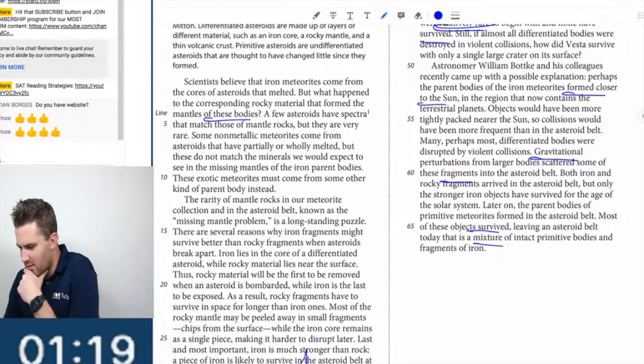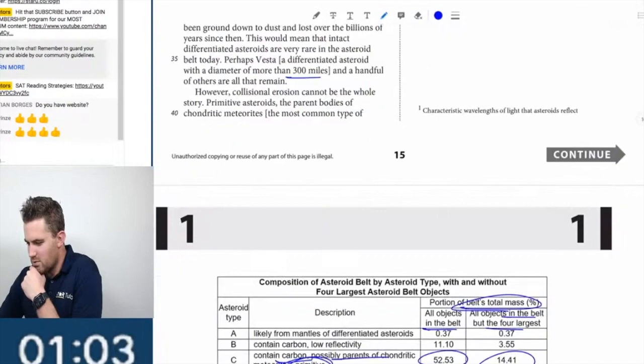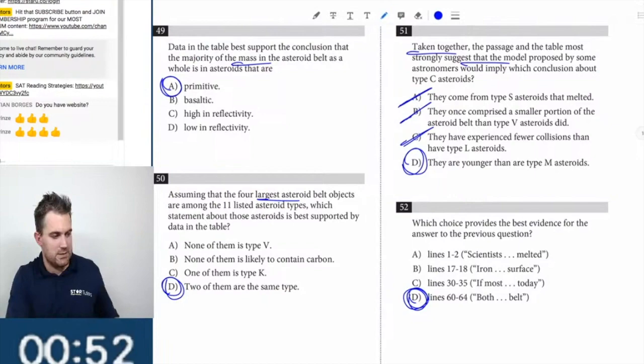I actually think it's a bit more frequent. Primitive formed in the asteroid belt, leaving the asteroid belt. Make sure intact primitive bodies and fragments of iron. I think that one is D. Is that the only one at the end? Yeah, I think this one is D as well. What's our time? Yeah, I think that that's it. That's a really hard passage to finish with though, guys. Let me see which questions we had left.